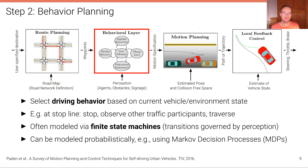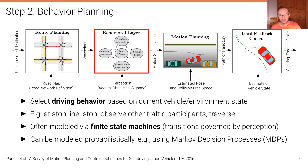The second step is the behavioral layer. The behavioral layer selects a driving behavior based on the current vehicle and environment state — for example, at a stop line it stops, then observes other traffic participants, and finally traverses the intersection. The behavioral layer is often modeled using a finite state machine (FSM), where transitions are governed by perception, but it can also be modeled probabilistically, for example using a Markov decision process (MDP), which we've already seen in earlier lectures.